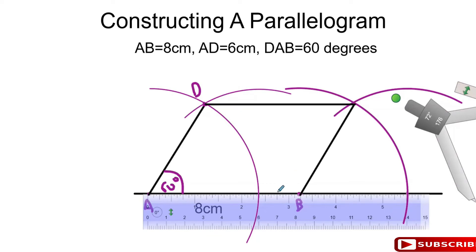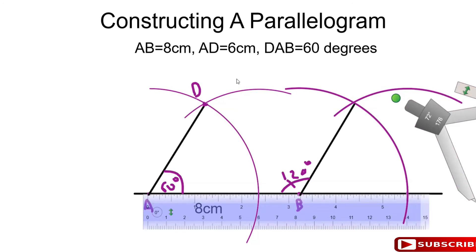I guarantee you this angle is 120 degrees — 120 degrees. Then draw your straight line from D over to this point. That's how you construct a parallelogram. All you need to do now is label this intersecting point as point C. And that's it — that's how you construct a parallelogram.